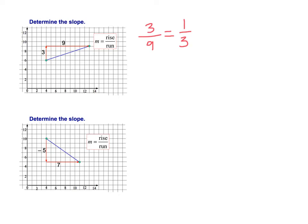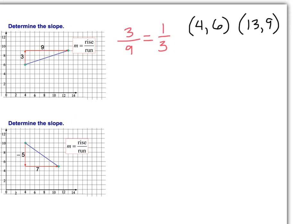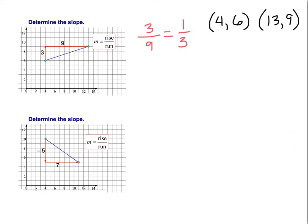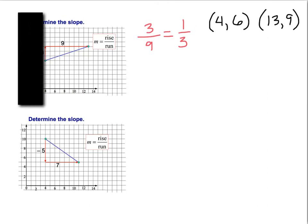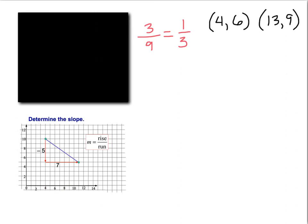Now that's awesome if you always have a graph, but you are not always going to have a graph. So let's look at what those two ordered pairs are. The first one is (4,6), and the second ordered pair is (13,9). We can get the same answer, the same ratio here, using a slope formula. So say that I didn't have the graph. Say that they didn't give me the graph. Pretend there's no graph. All you have is ordered pairs now.